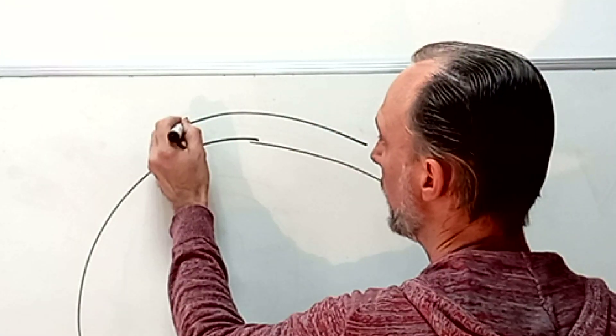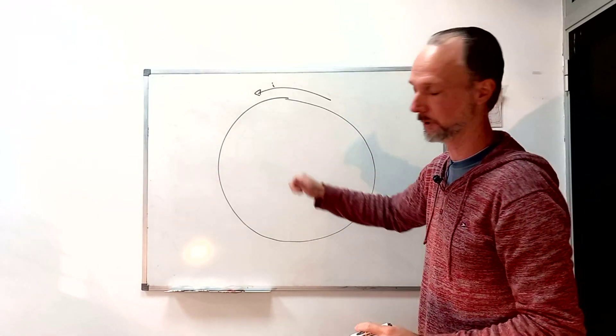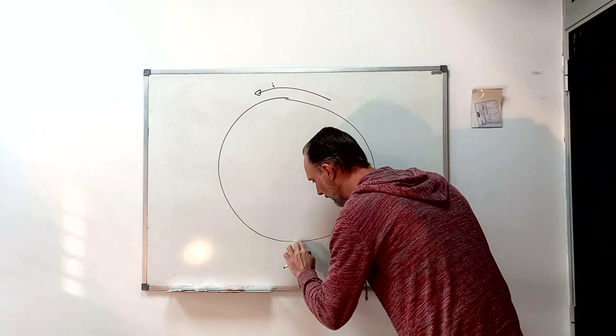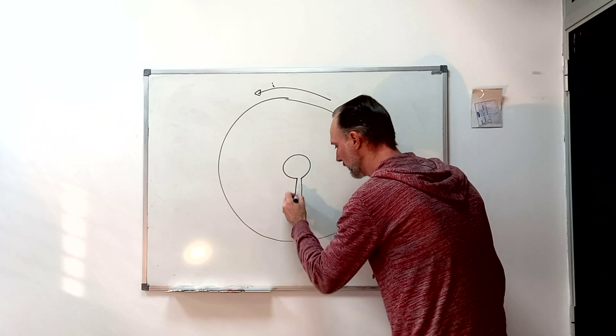it will induce a current in this direction that will generate a magnetic field that goes against the initial one. But we can make a trick: make an interruption in here, make an inner loop like this one.